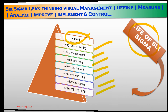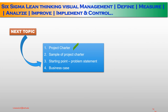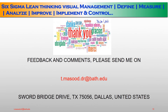In conclusion, we discussed the process owner and champion's role and responsibilities, and the Black Belt, Green Belt, and Yellow Belt roles and responsibilities, as well as the life of Six Sigma. Our next topic will be the project charter — a sample project charter covering the starting point, problem statement, and business case. Thank you very much for your precious time. Please send your feedback and comments, stay at home, stay safe, stay inspired and blessed.